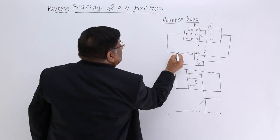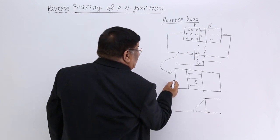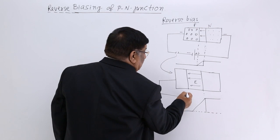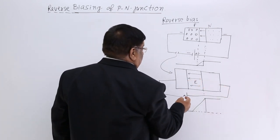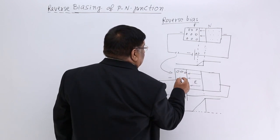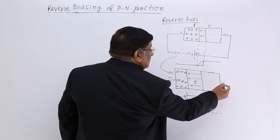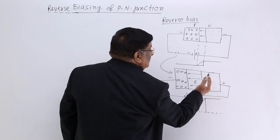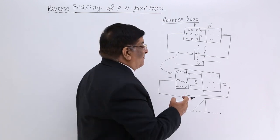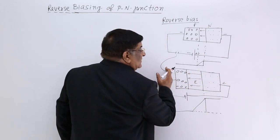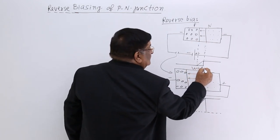After connecting, when we switch it on, what happens? The minus terminal attracts positive charges and the plus terminal attracts electrons to its sides. Electrons move toward the positive terminal, positive charges move toward the negative terminal, and the depletion layer gets wider.